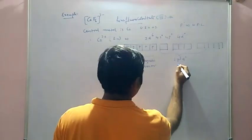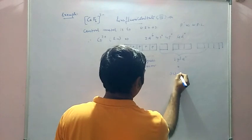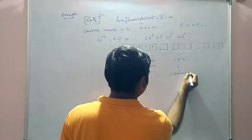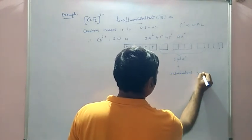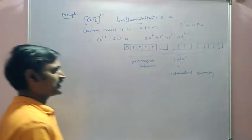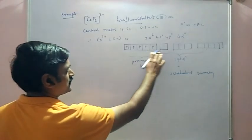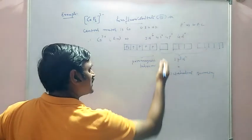So sp3d2 hybridization brings octahedral geometry to this complex. At the same time, outer orbitals are utilized, d orbitals are utilized.